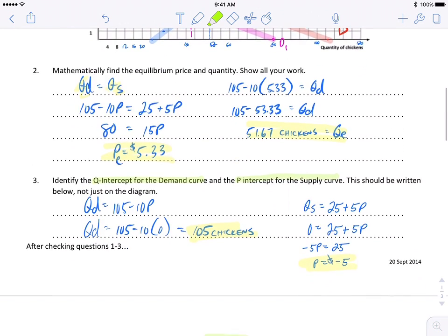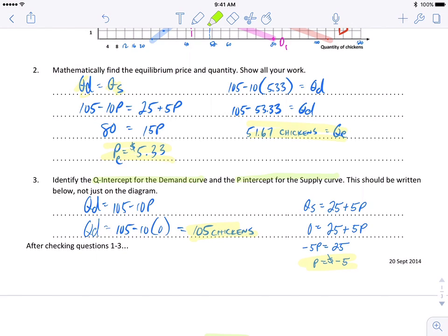That's going to be one of our two points, and then for question three you're asked to find the Q intercept for the demand curve and the P intercept for the supply curve. That gives us a second point for each of those curves that we can then graph. Your Q intercept, if you use the quantity demanded equation, you just put zero in for the price and you solve it and you get 105 chickens where the demand curve intersects the quantity axis. For the P intercept for the supply curve you put zero in for the quantity supplied and you find out where it hits the axis on the price axis and you get negative 5.